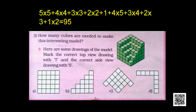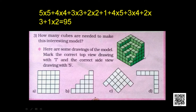Now, you see this design — how many cubes are needed to make this interesting model? It is made up of cubes. In the uppermost layer on the right side: one, two, three, four, five — five cubes. From top to bottom there are also five. So in this side there are five into five, 25 cubes. Similarly, here there are four cubes, and in that section also four, so four into four — 16 cubes.